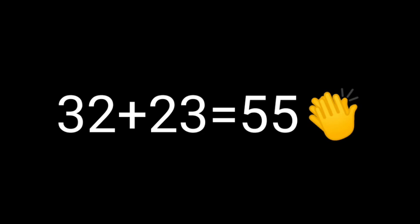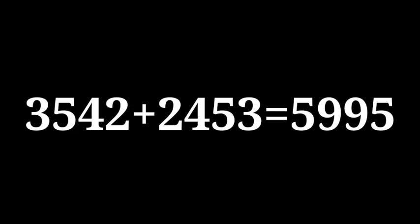Let's see another example: 3542. When we reverse the digits of 3542, we get 2453. Then we add these two numbers: 3542 plus 2453. The result is 5995. Is this a palindromic number? Yes, of course, because we can read 5995 forward and backward the same.